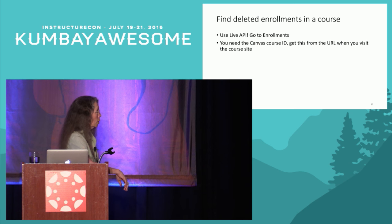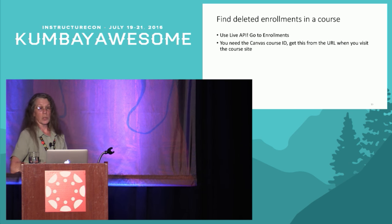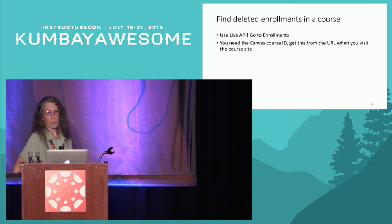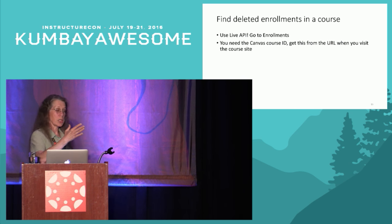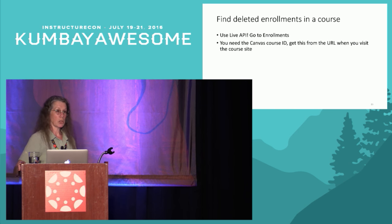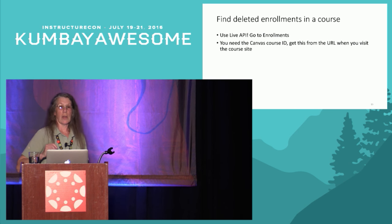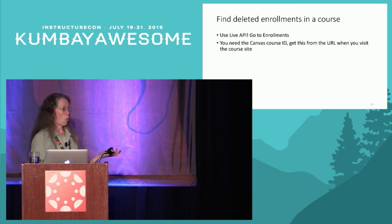We're going to find deleted enrollments in a course. Our enrollments are all created automatically by import from the SIS — Banner in our case. When a student withdraws or drops from a course, they get the deleted status, so you don't have any information about them anymore. You can't look at a course and see who dropped it. We get requests not infrequently from faculty and sometimes financial aid — they need to know when was the last time the student was active in the course, not what date they dropped. So the only thing we can do is re-enable the enrollment, but first we need to find it.